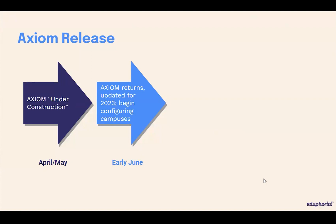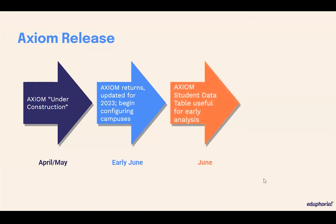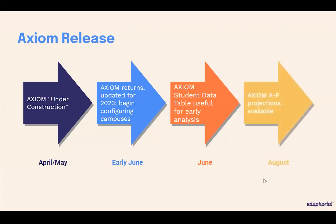In June, once you have your data files, you'll be able to go into Axiom and access that student list that's available through one of the domain tables. You'll actually be able to load that student list and look at the results, minus scale scores. This may be useful for some early analysis. You'll have information in that table related to test taken, score codes, whether or not they're in the accountability subset, and information based on high focus groups or different demographic student groups. You can use that data table to potentially make early monitor groups. Then in August, when the rest of the files come in with the scale scores, that's when Axiom will display the A through F accountability projections as soon as those files are in.